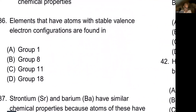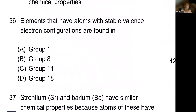Elements with a stable valence electron configuration are found in which group? Let's talk about what a valence shell is. Sodium is in group one and has one valence electron — it's not stable. We have to keep sodium in oil because it's unstable. Sodium can either lose all electrons to reach a stable noble gas core, or gain electrons until it reaches eight.